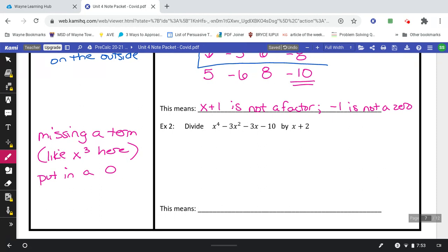So we'll write a 1 for the x to the 4th, and then 0 for x to the 3rd. Then negative 3 for the x squared, and negative 3 for the x, and negative 10. So just make sure any time you're missing a term, if it skips over one of the exponents, that you write a 0 in its place. The x plus 2, I will check to make sure that negative 2 goes on the outside.